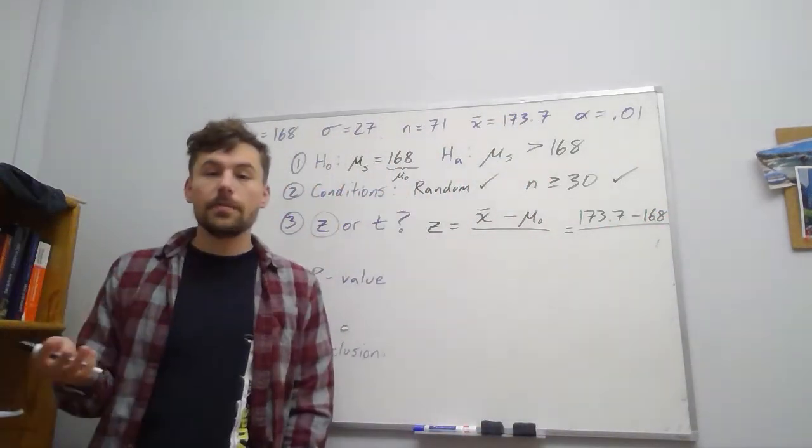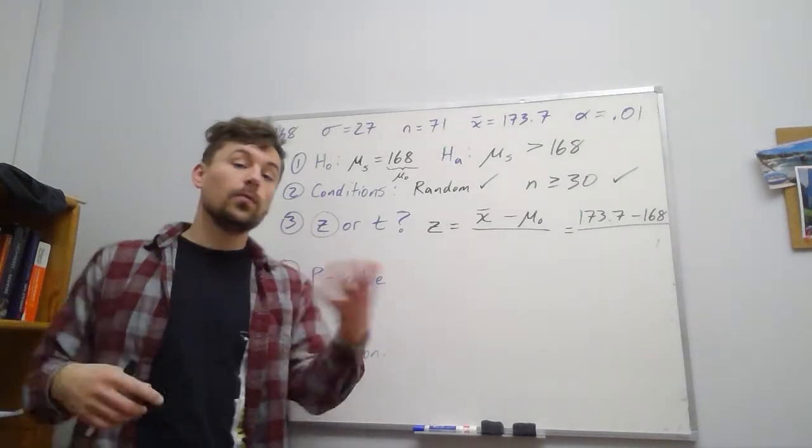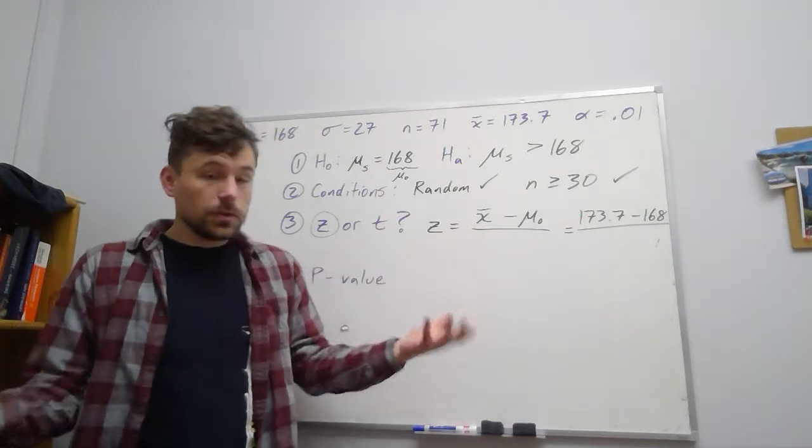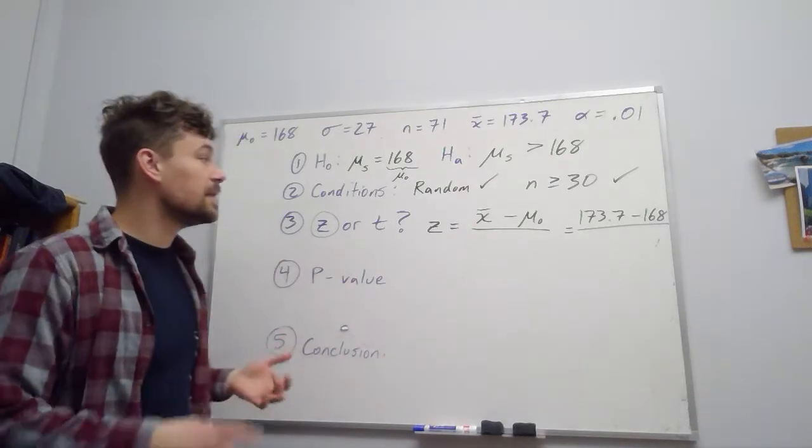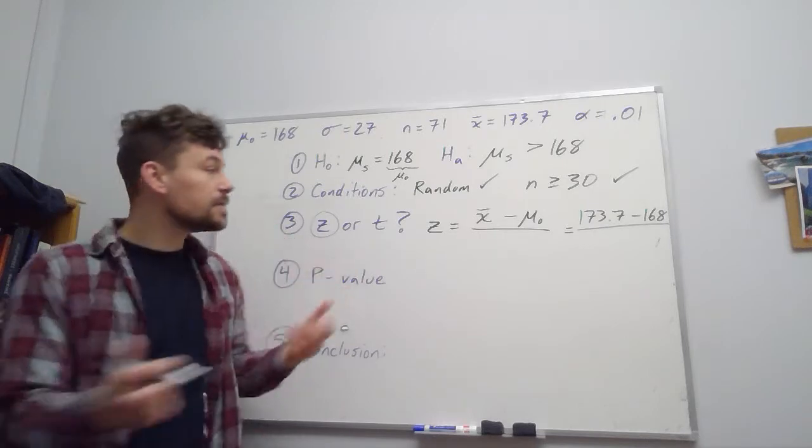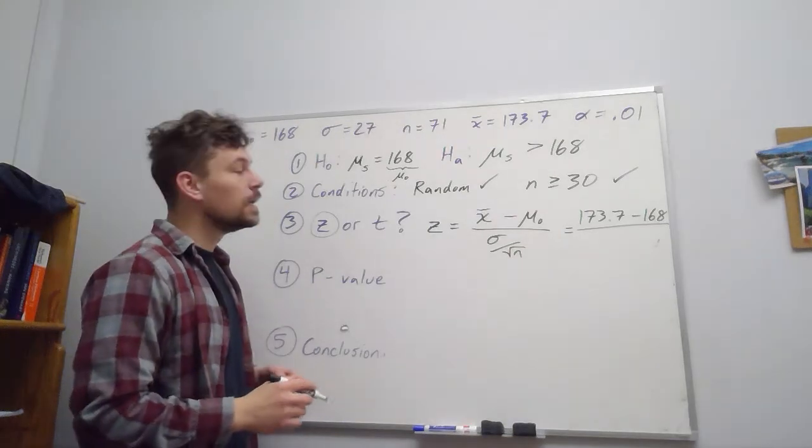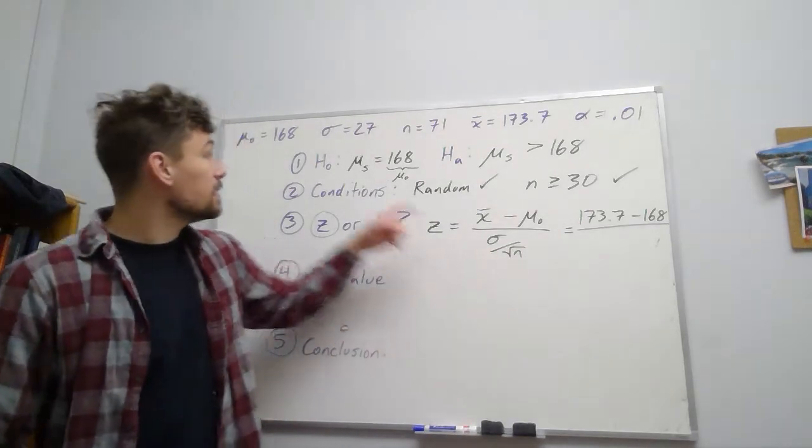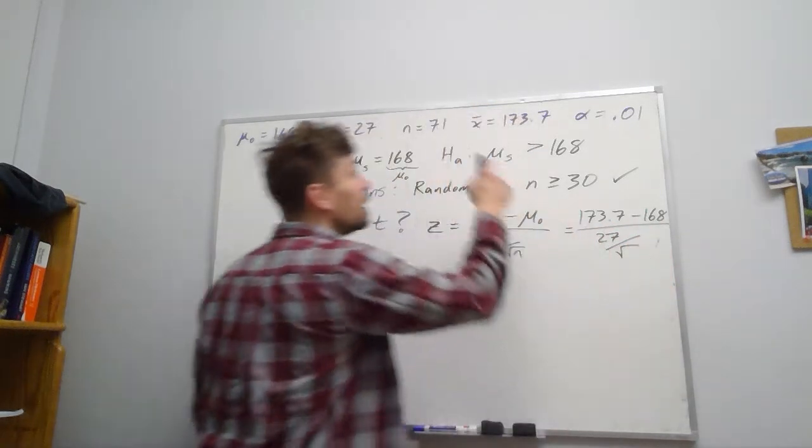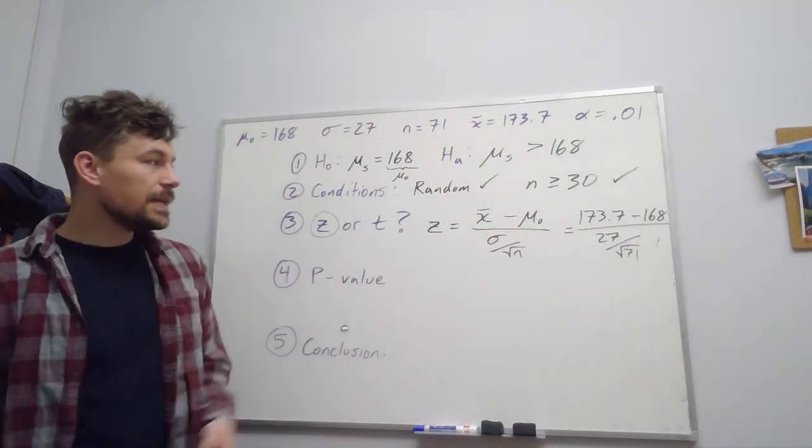Now on the bottom, we usually divide by the standard deviation. So again, depending on what scenario we're in, one sample versus two, means versus proportion, that could look a little bit different. So in this case, we are one sample, and we're doing means. So it should just be the case that we're using our old friend σ over the square root of n. Now the good news is we have both of those things. So σ, 27, over the square root of n, which is 71.